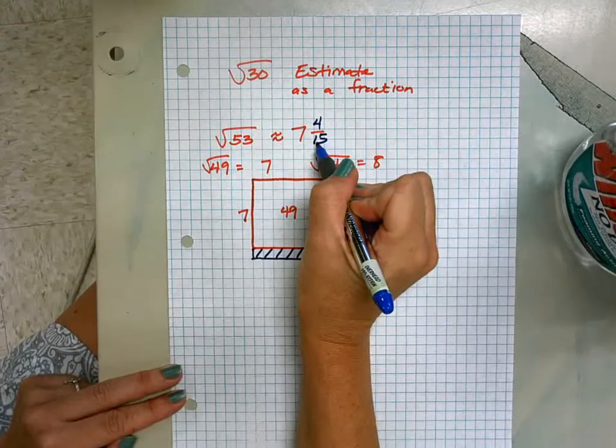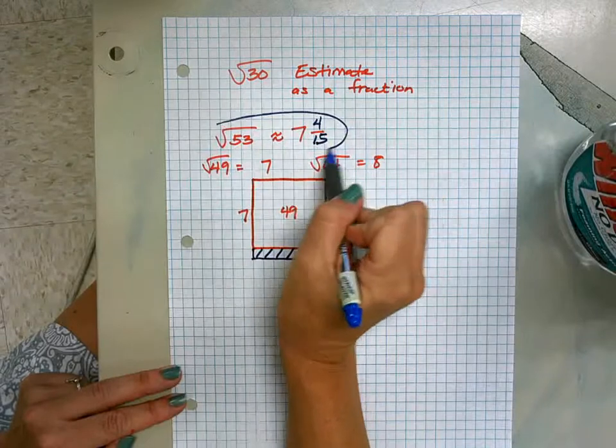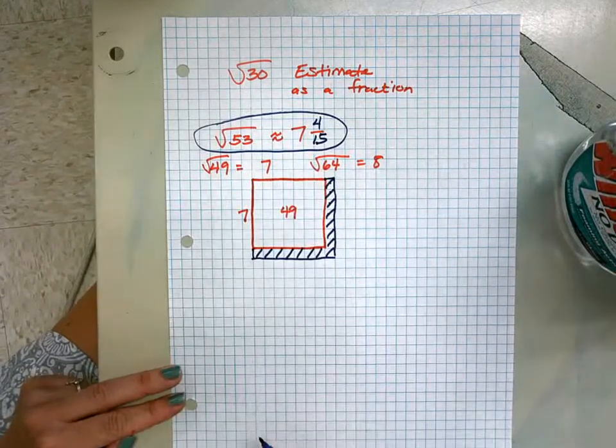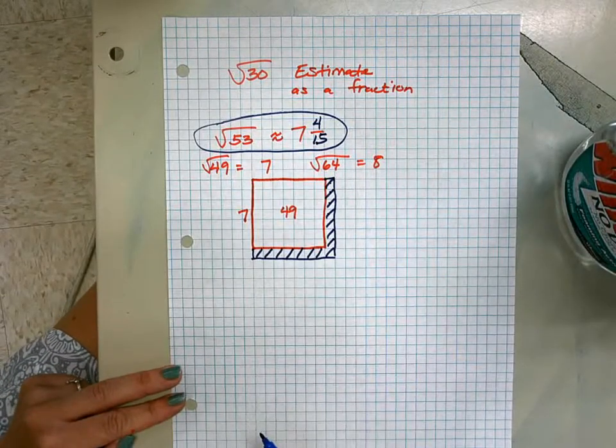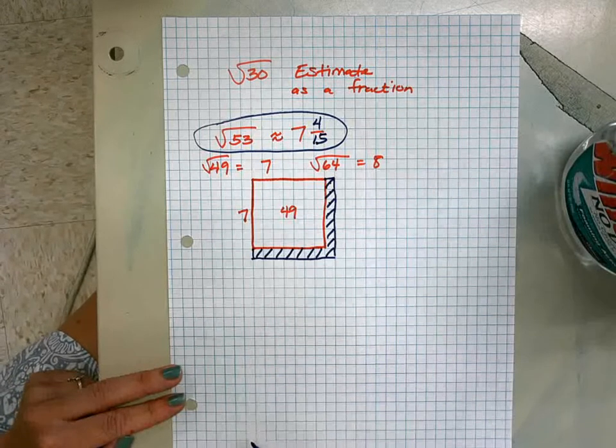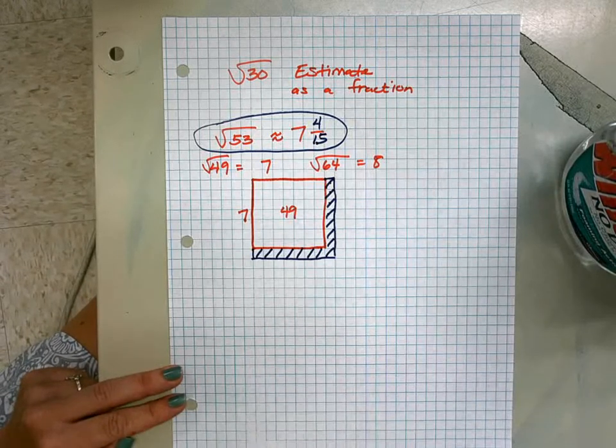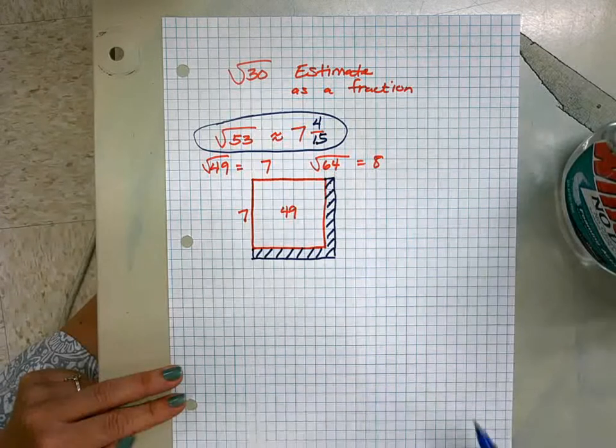The square root of 53 as a fraction is approximately 7 and 4 fifteenths. I'm going to give you another one and I want you to pause me and try to do it yourself and then check it with me, okay?